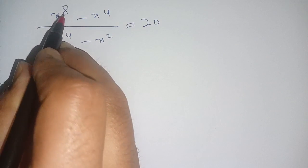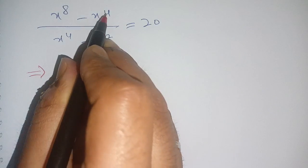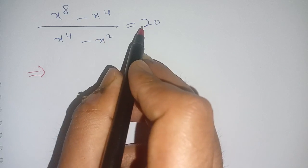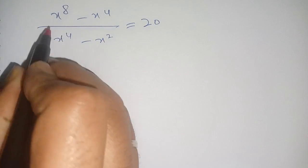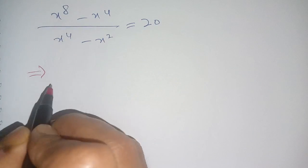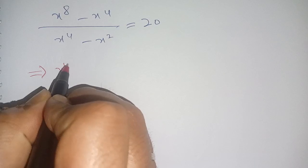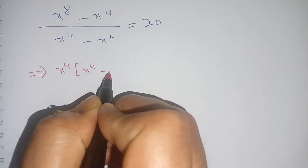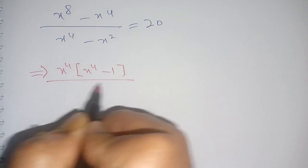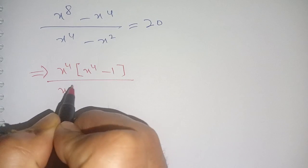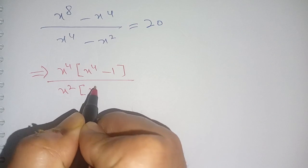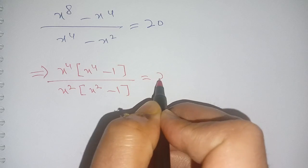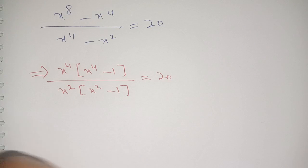How to solve (x⁸ - x⁴) / (x⁴ - x²) = 20. Let us solve this. In the numerator we take out x⁴ common, we get x⁴(x⁴ - 1) divided by x²(x² - 1) is equal to 20.